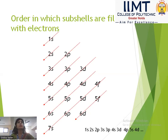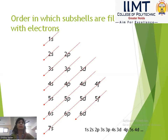We have already shown that s has 1 orbital, p has 3 orbitals, d has 5 orbitals, and f has 7 orbitals. The maximum number of electrons: s — 2, p — 6, d — 10, f — 14.